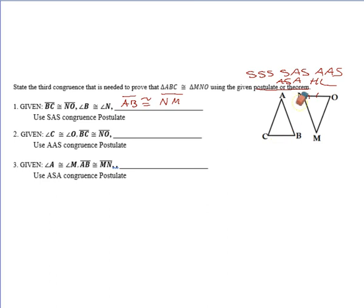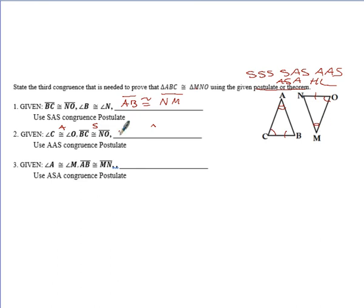For the next one: given that angle C is congruent to angle O and BC is congruent to NO, I want to use angle-angle-side. That's an angle and a side, so my third piece has to be an angle. But for angle-angle-side, I wouldn't want the angle adjacent to the side — that would be angle-side-angle. So I need the angle at the other vertex: angle A is congruent to angle M.